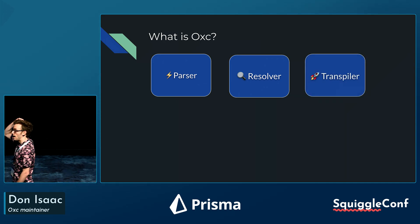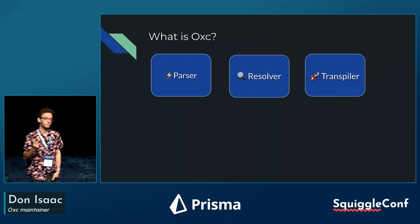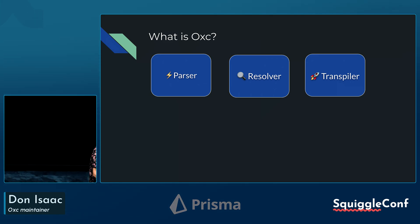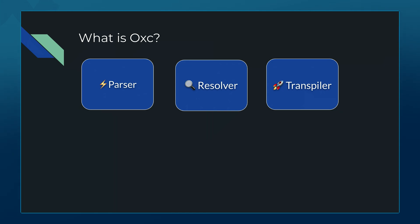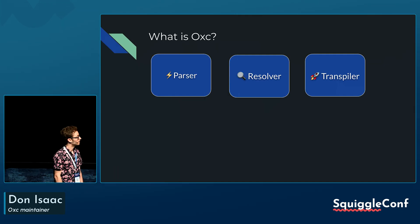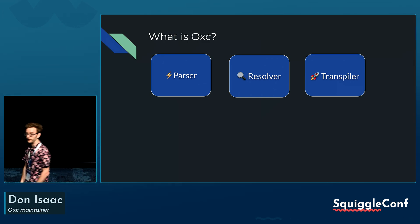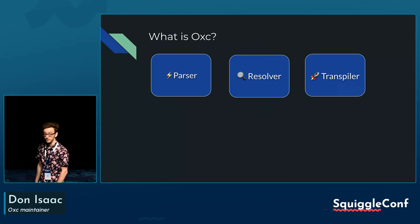We also have a transpiler. There are really two parts to this one tool. The first is a Babel-like transpiler for transpiling JavaScript and TypeScript — handling TypeScript to JavaScript, and JSX. We're working currently on the different plugins that Babel has. We just released the alpha version for the transpiler, and the benchmarks are pretty impressive.